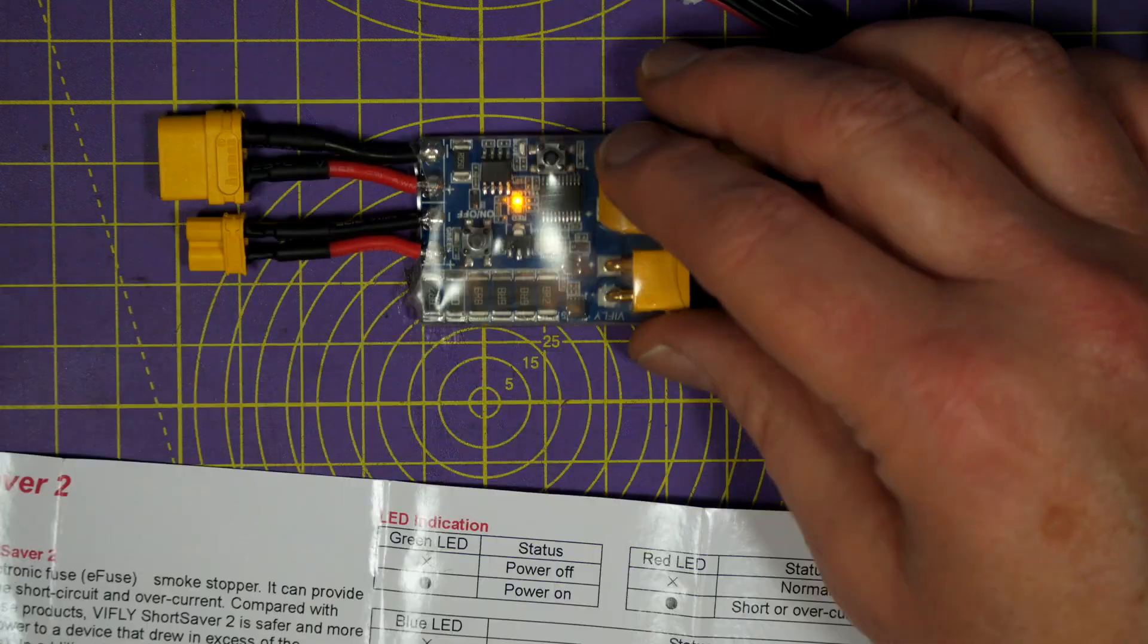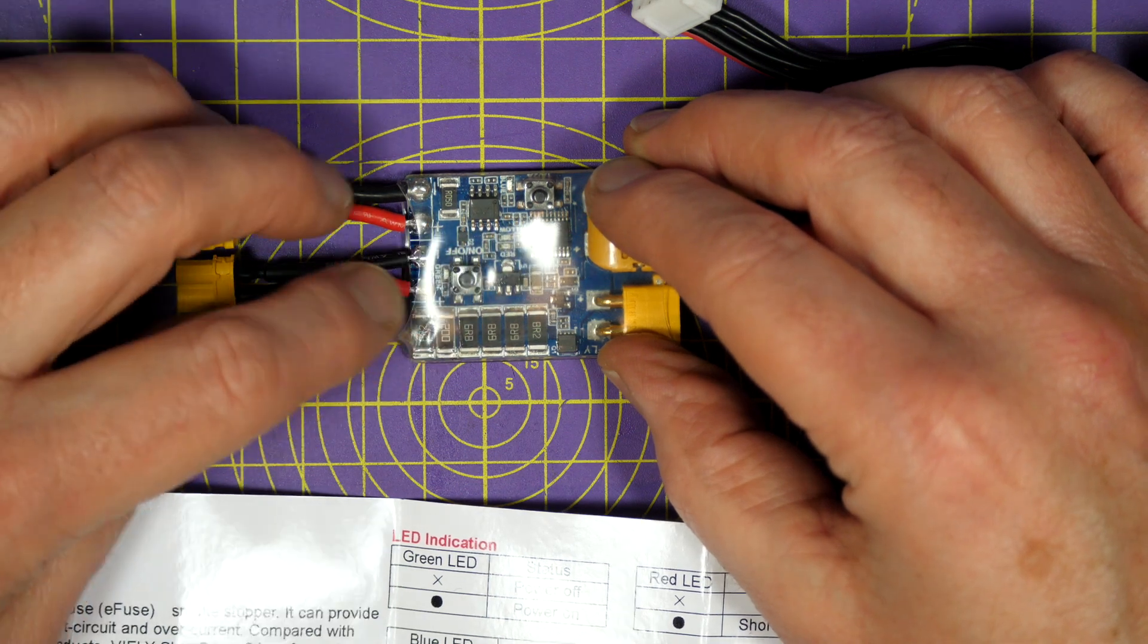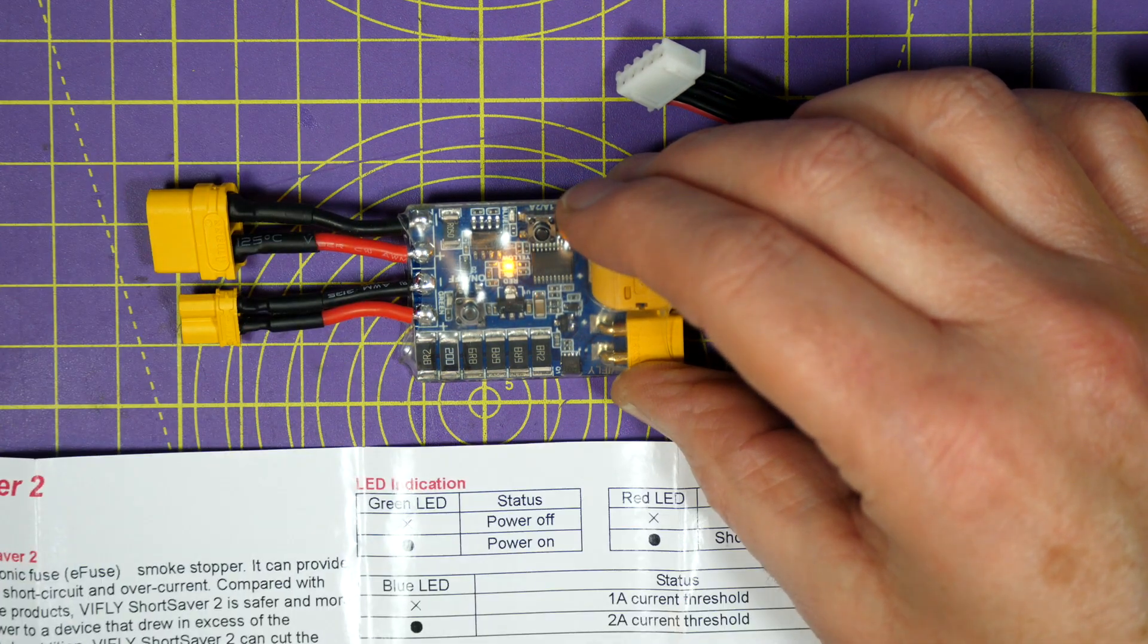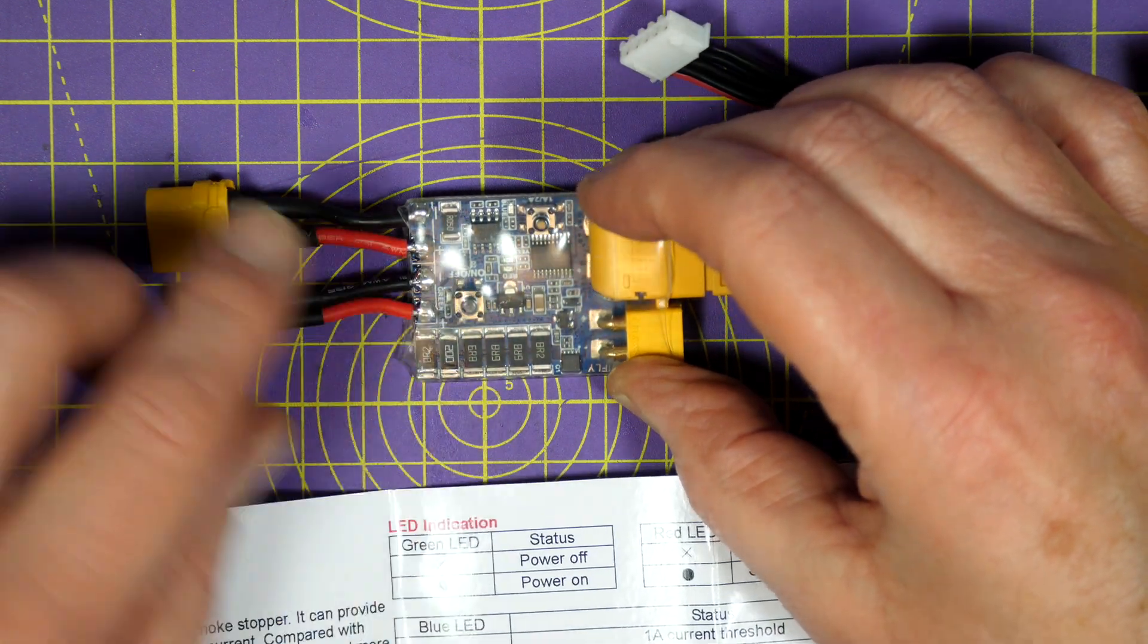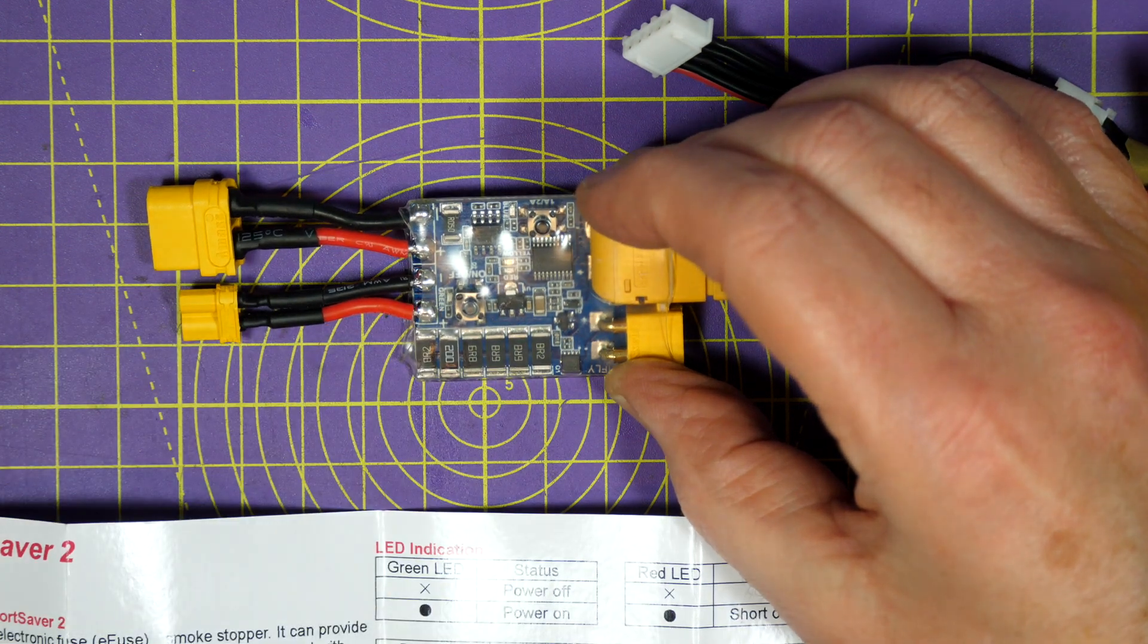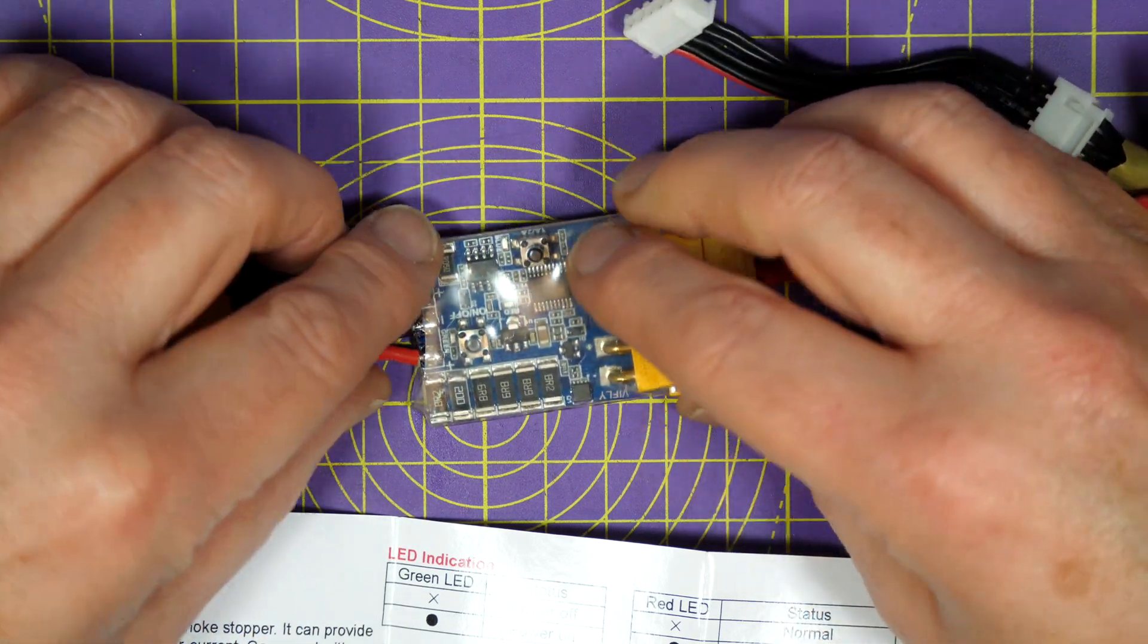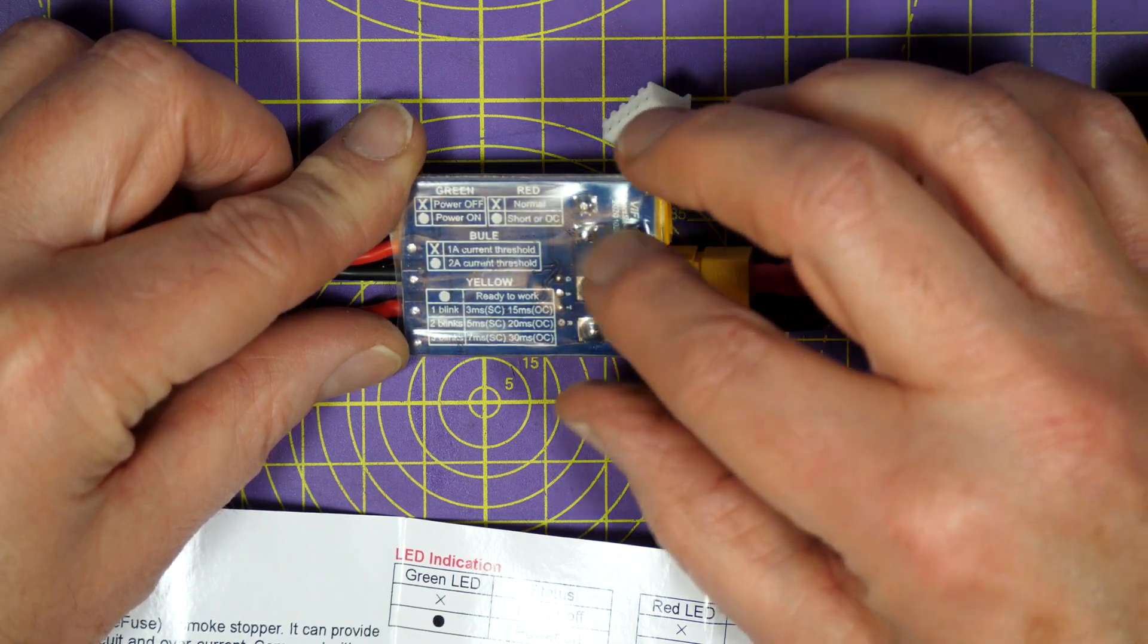And the way you set that is long press the on-off button. And that's going into single blink mode, if you can see that. That means it's on the default setting, which is 3ms. And if you want to change it, you just press the button. There's two blinks. It tells you what it is down here. Three blinks. Press it again, and you're back to where you were. On the version 1, there was a couple of solder pads on the back here that you had to bridge to change that.